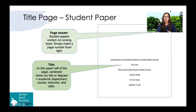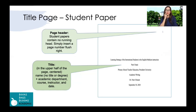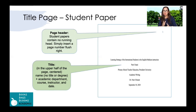This is how the title page looks for a student paper. Student papers contain no running head — simply insert a page number flush right. The title is centered. Include your name — no title or degree — followed by the academic department, the course, the instructor's name, and the date you submit the essay.